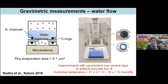If you seal this container with the capillaries so the only way water can evaporate is through them, the weight reduction gives us the estimate of water flow. We use a seven-digit micro-balance with microgram precision to monitor the tiny water flow. All of this is done at controlled temperature and humidity to ensure consistent results.